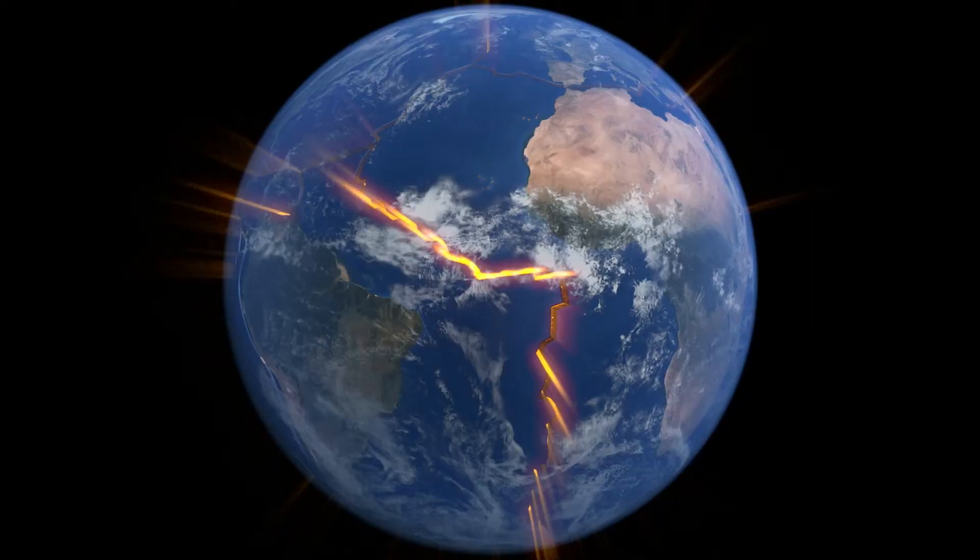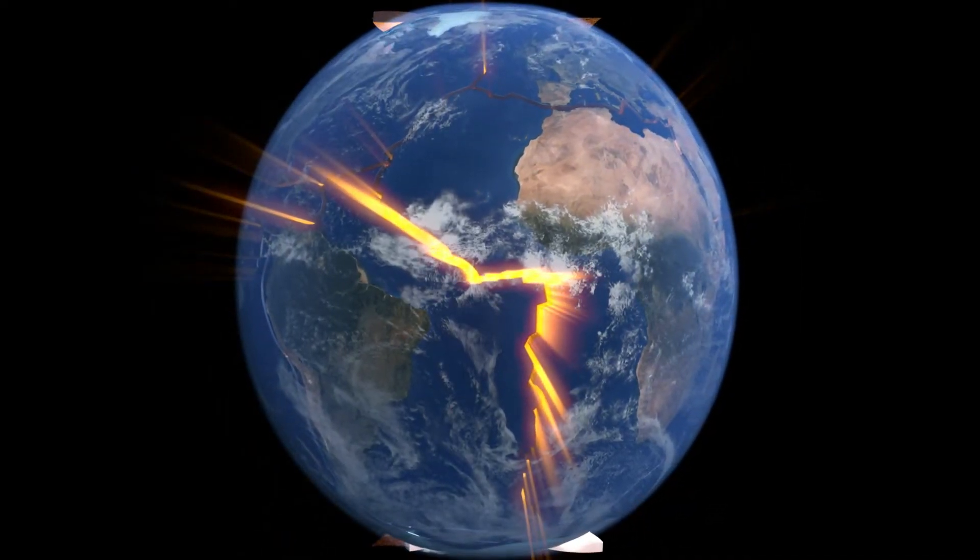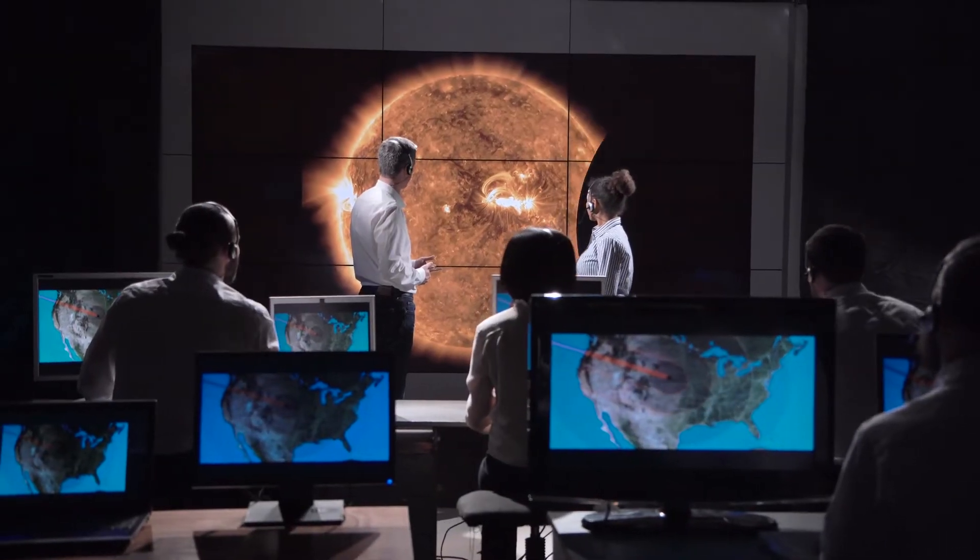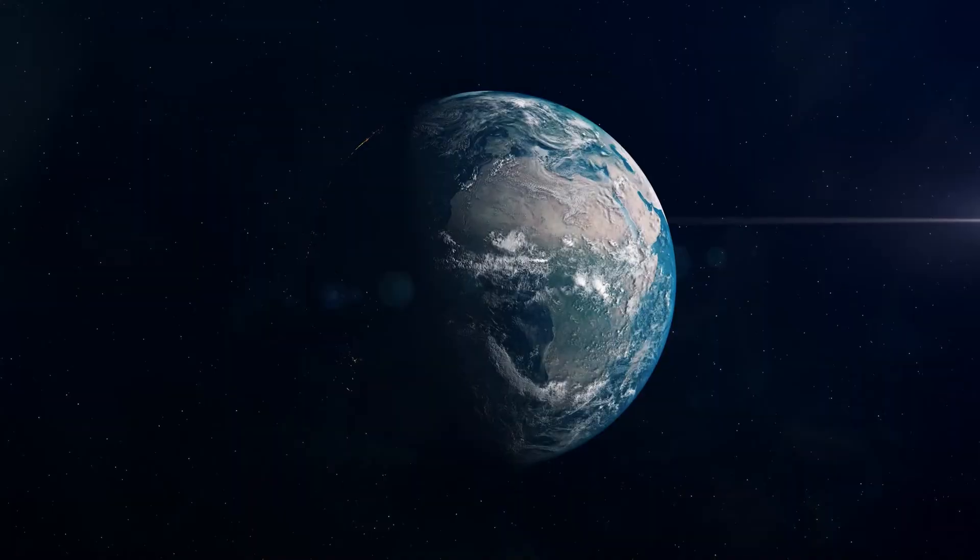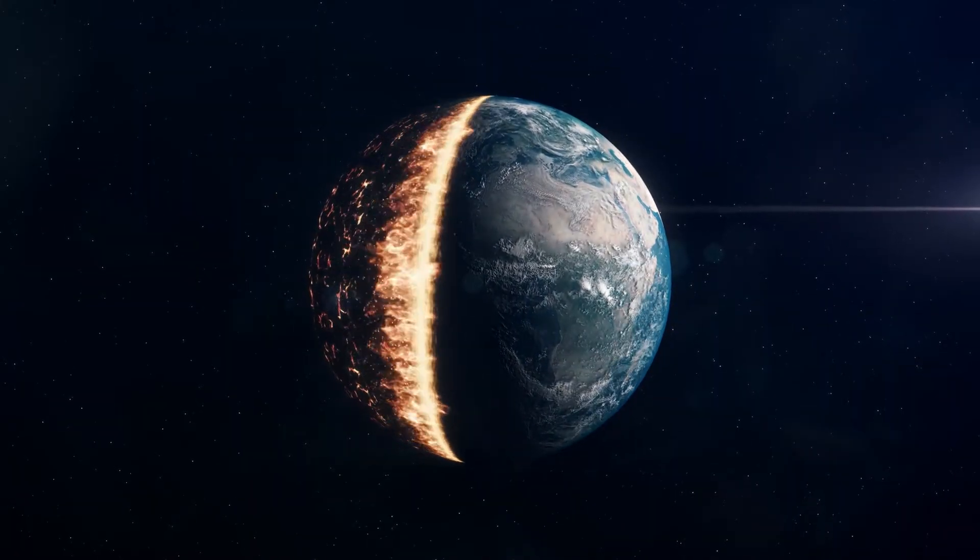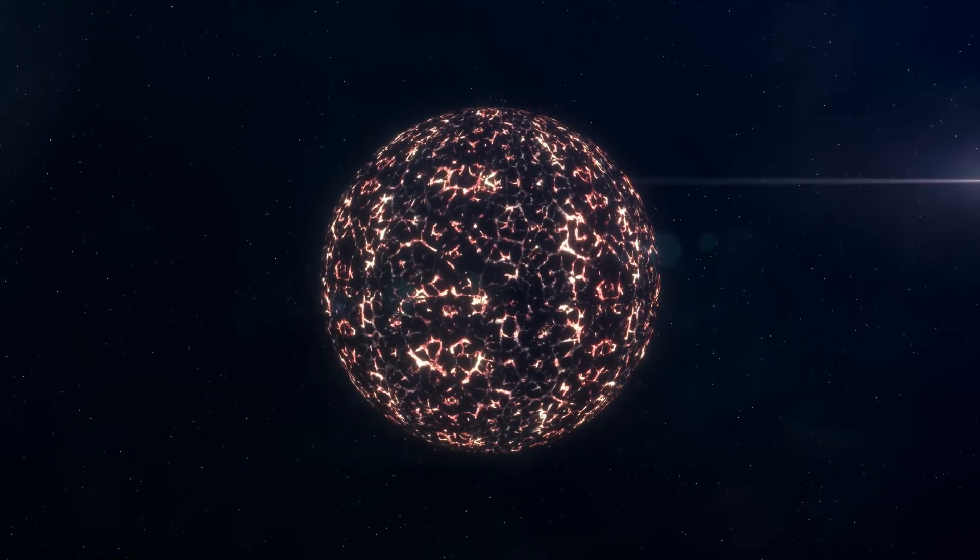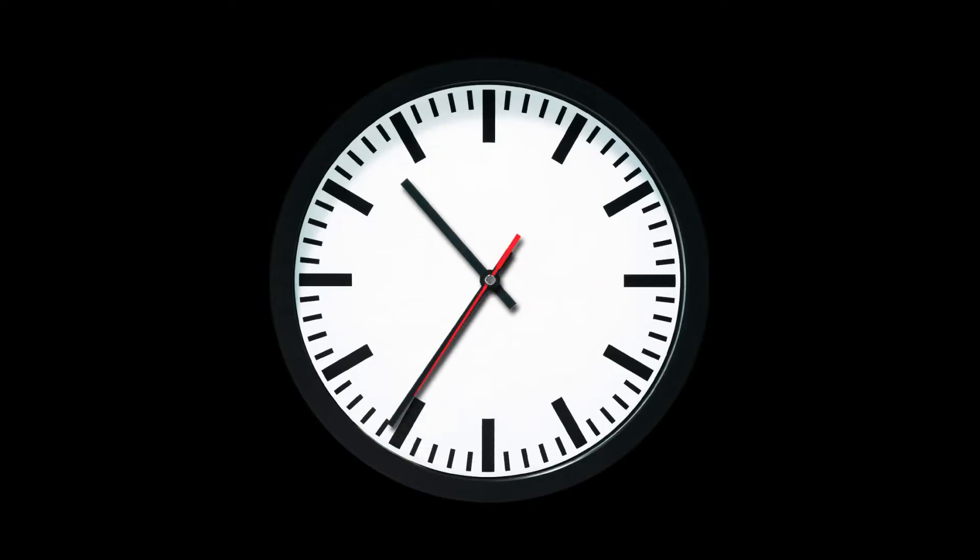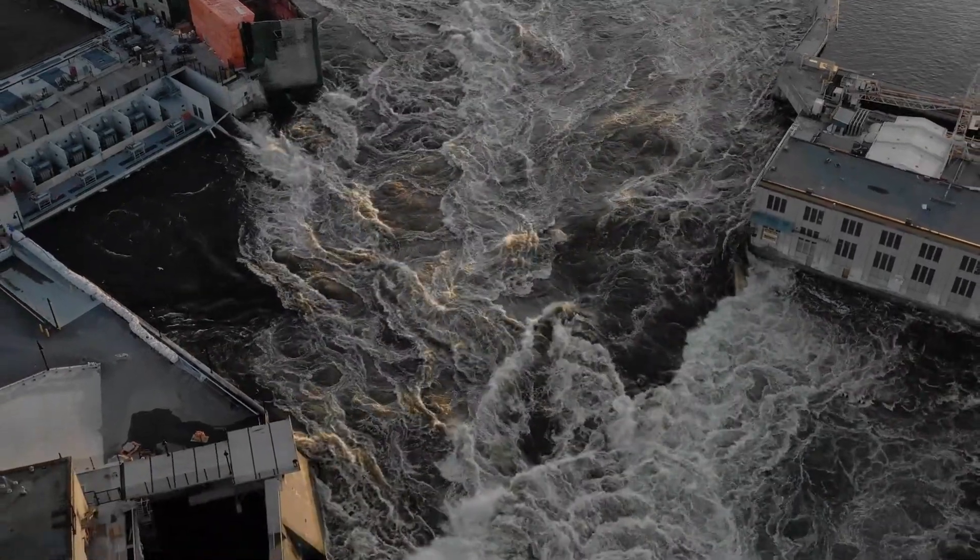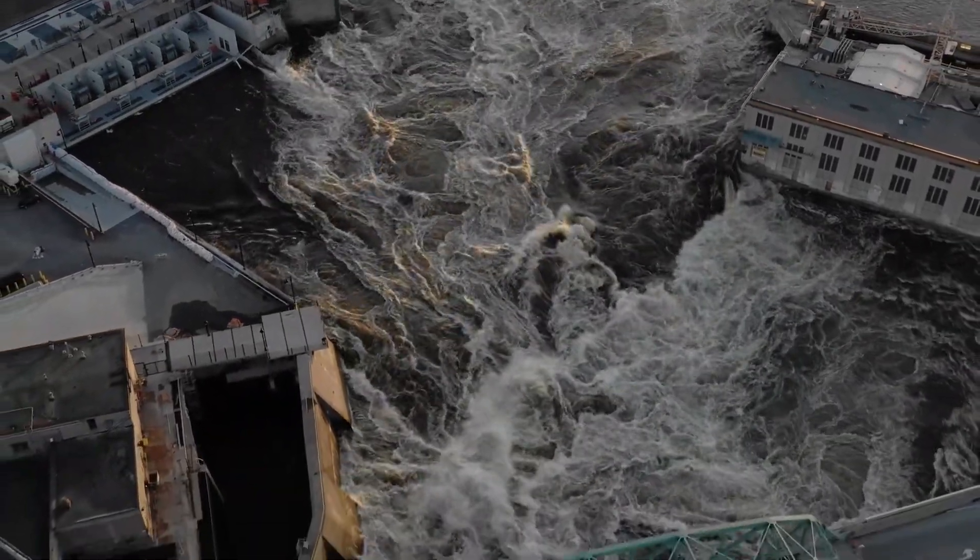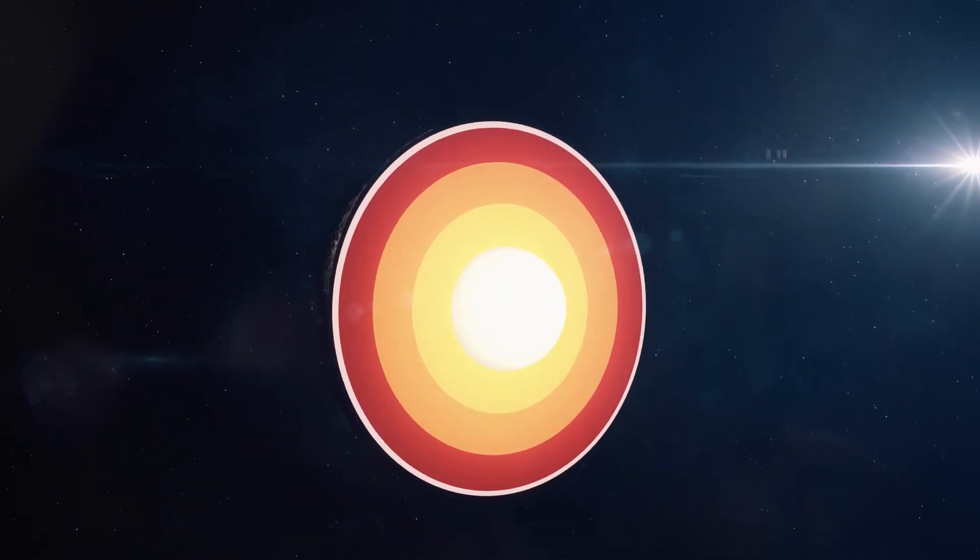Now imagine for a moment that the center of the Earth suddenly stopped rotating. What would happen then? The scientific community is currently engaged in a lively discussion and a great deal of conjecture around this disastrous scenario. The rotation of the Earth has already begun to slow down, but this is a sluggish process that will take millions of years before it has a substantial impact on our globe. On the other hand, the impacts would be seen much more instantly and may have severe ramifications for life on Earth if the Earth's core were to stop spinning altogether.